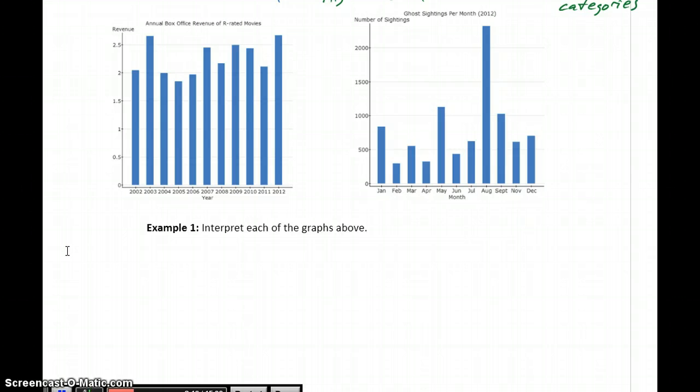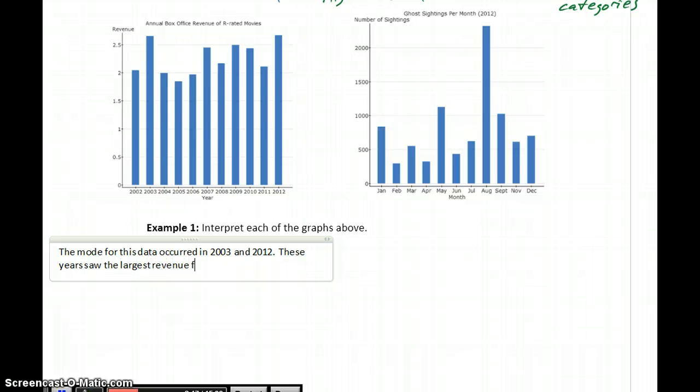We can first start by talking about the mode. In this case, the mode for this data occurred in 2003 and 2012, because that's where we see the two tallest bars. They're not exactly the same, but they're both very close. So we can consider both of those to be the modes.